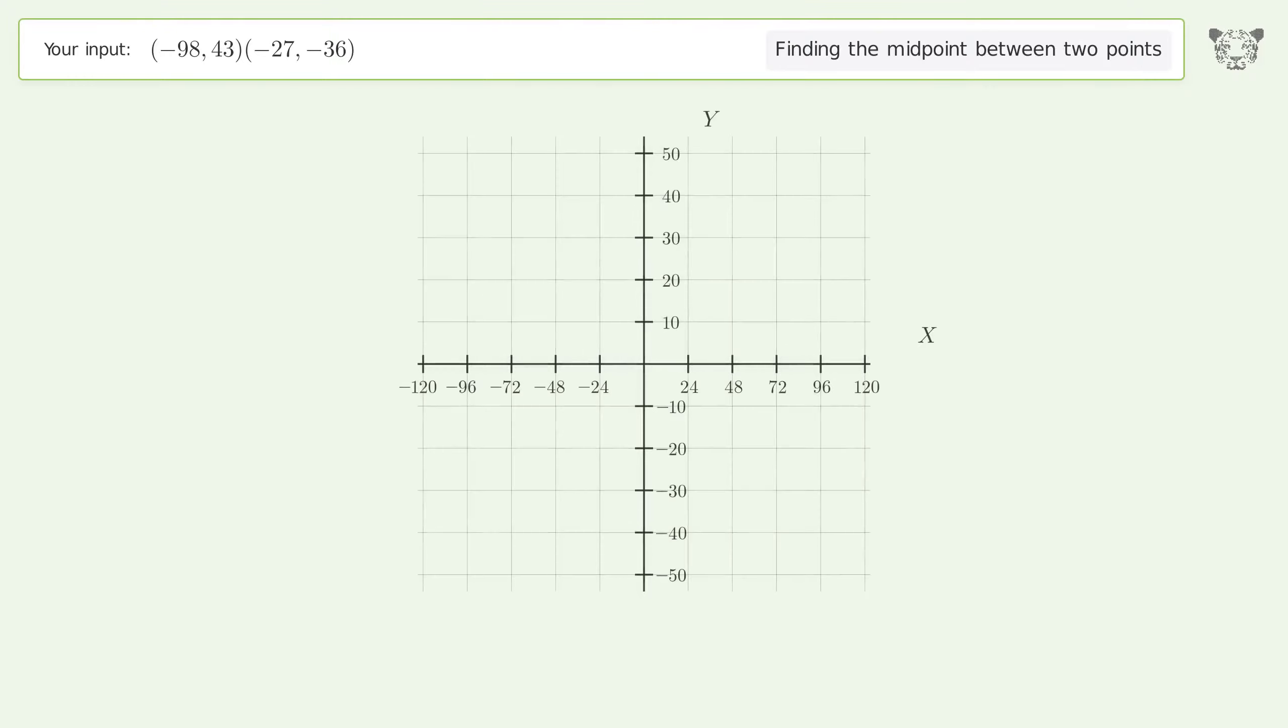And so, the midpoint is negative 62.5, 3.5.